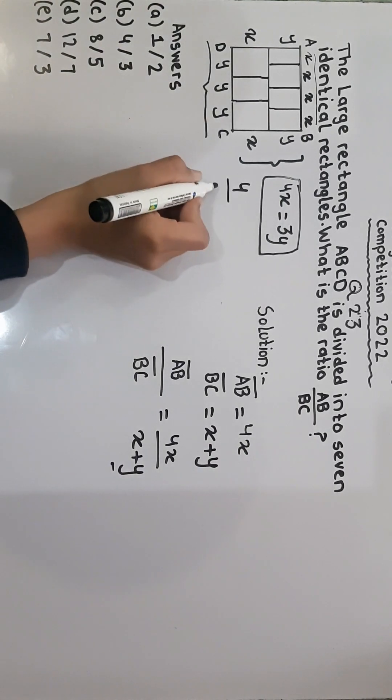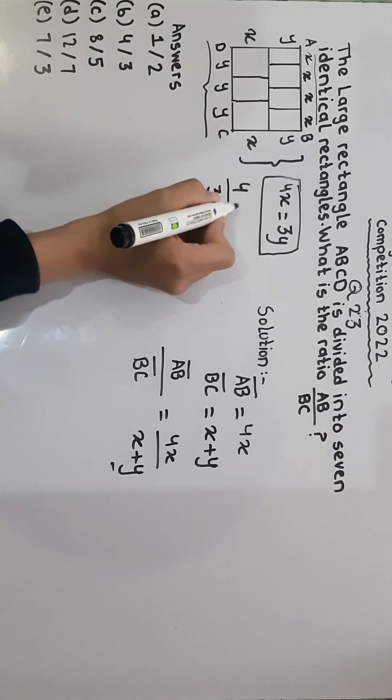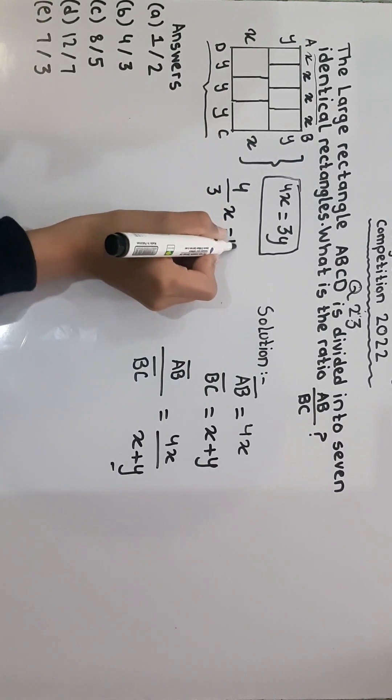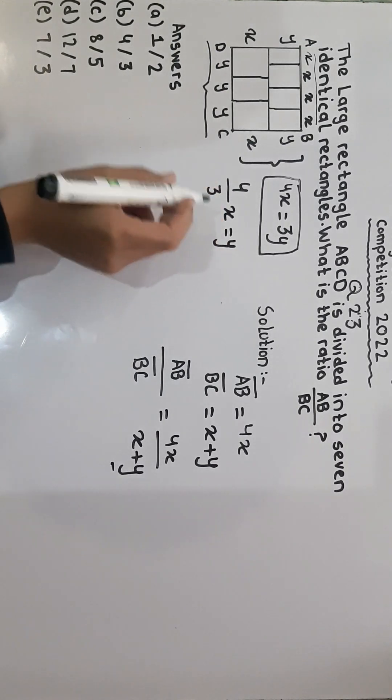The 3 here is multiplying with X, so we will divide it with 4 and X will come as it is. It is equal to Y. So we know that 4 over 3X is equal to Y.